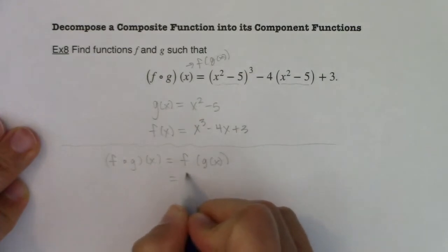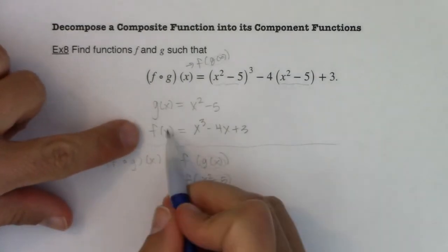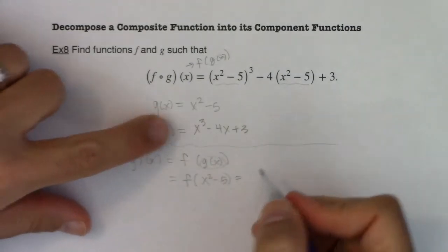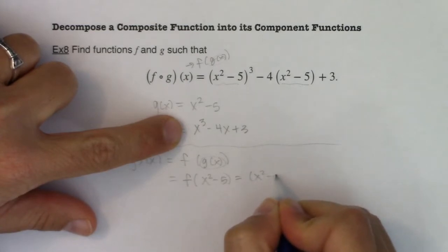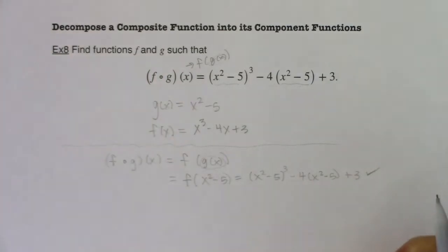So it's f of g of x. Let's see if we got it. This would be f of g of x where g of x is x squared minus 5. And if I swap that in for my f function, I'm supposed to cube that thing, subtract four of it, and then add three. And that worked out.